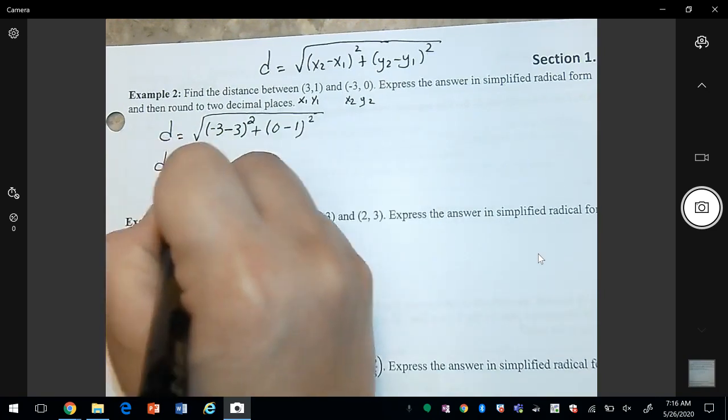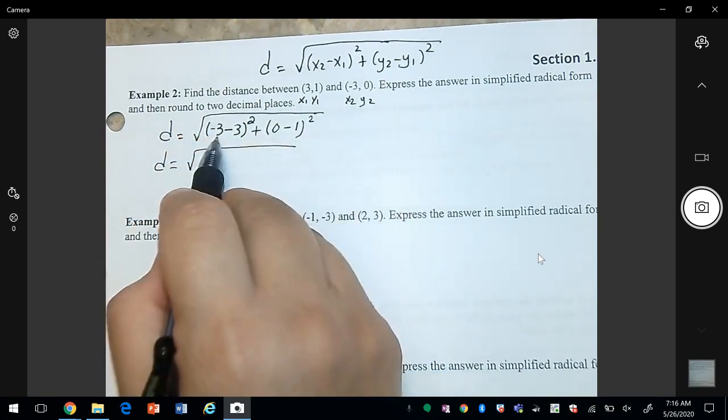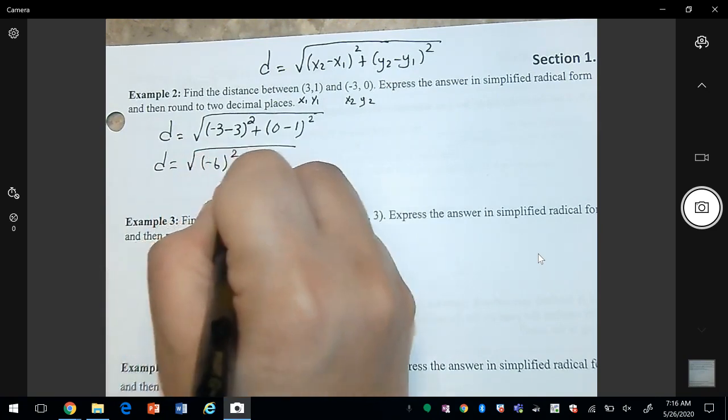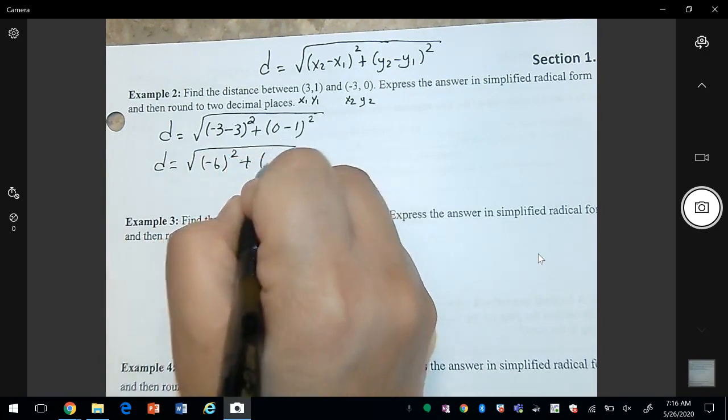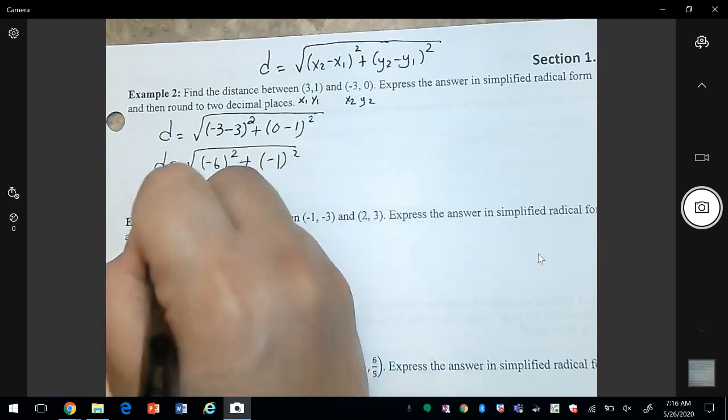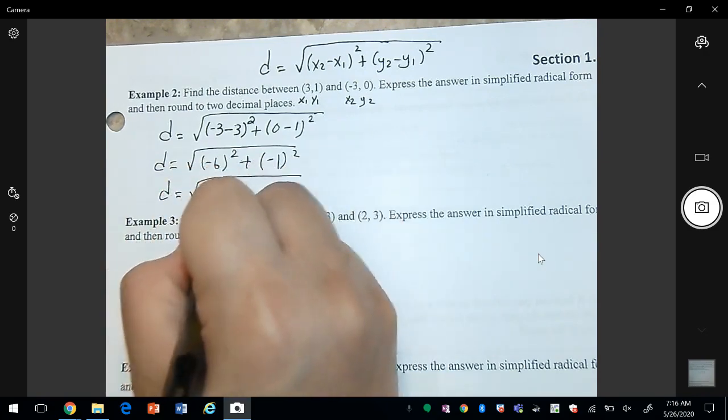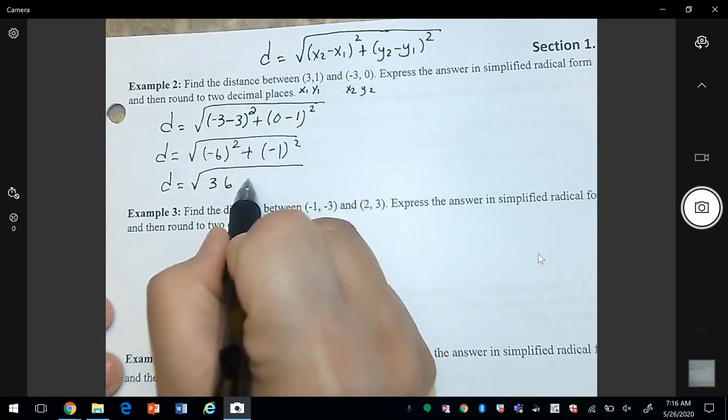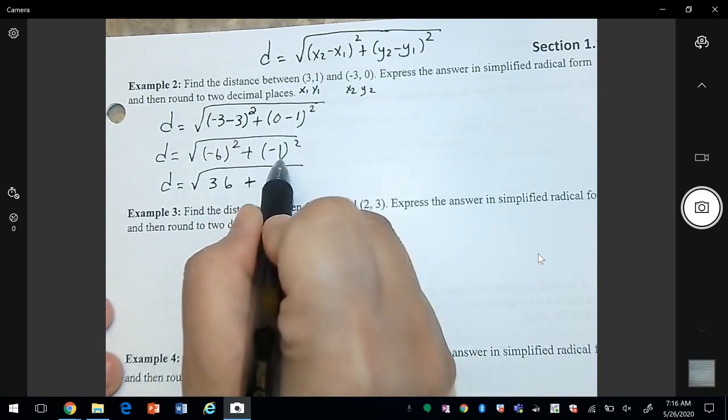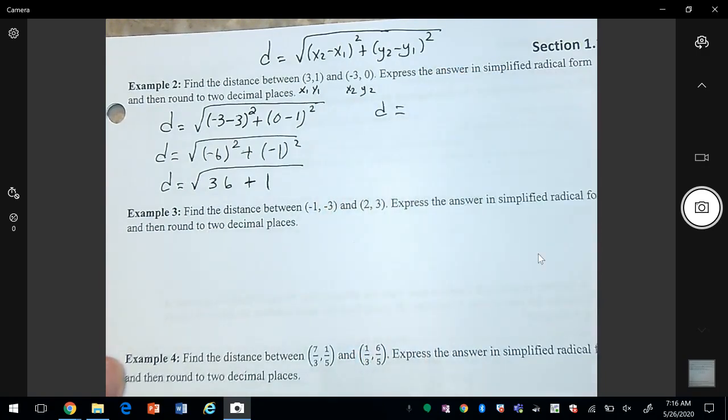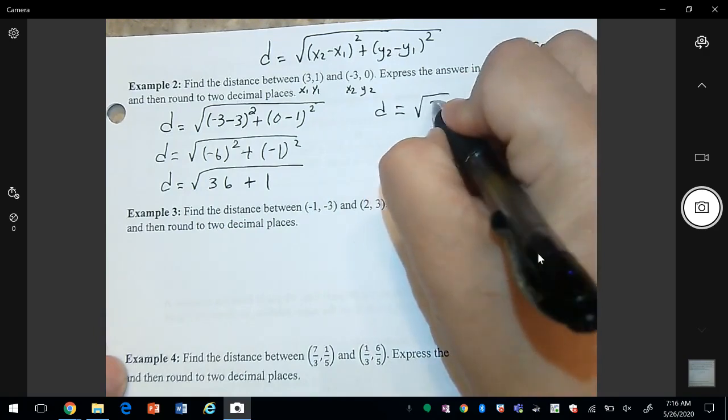And then we're going to simplify. Negative 3 minus 3, negative 6 squared, plus negative 1 squared. Negative 6 squared is 36. Negative 1 squared is 1. So we get that d is equal to the square root of 37.